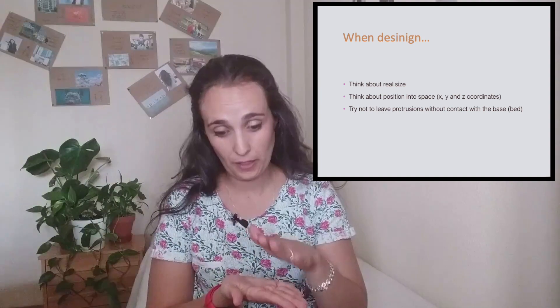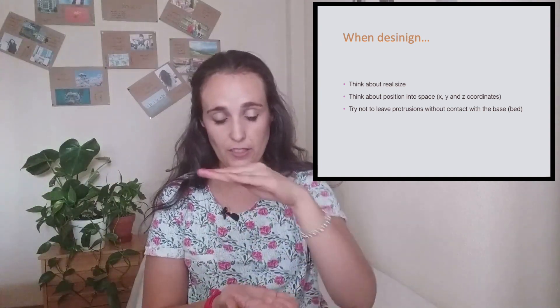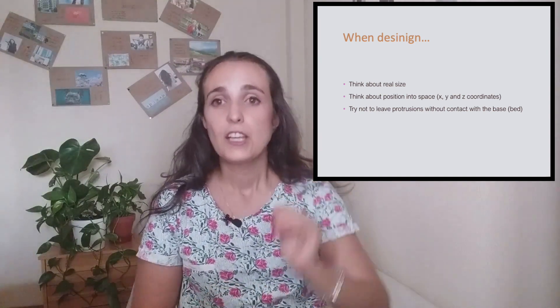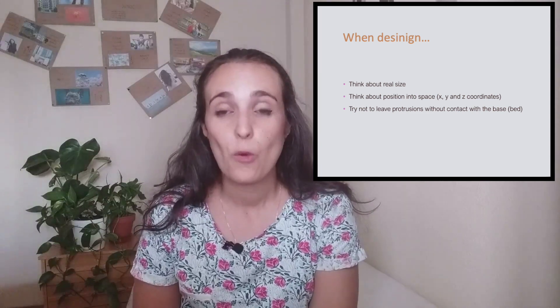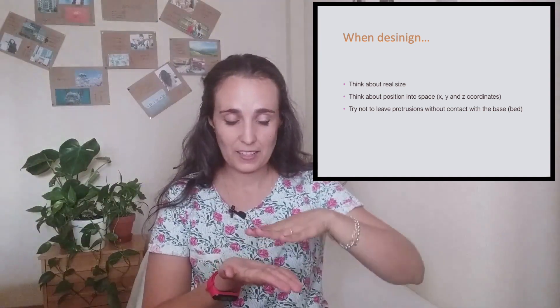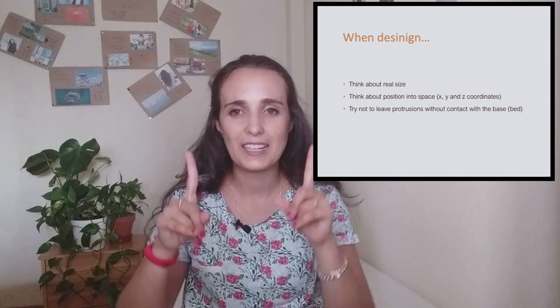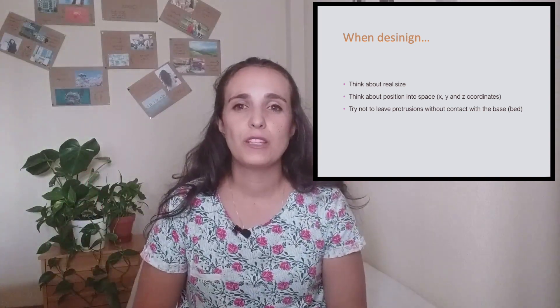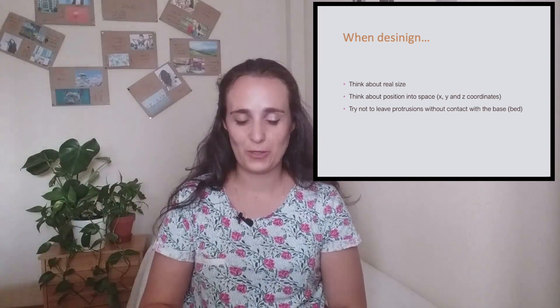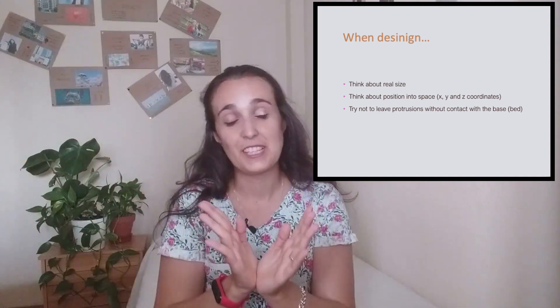As I told you, the 3D printer is going to do in the base, in the bed, the first layer. Then the second, then the third, then the fourth, and so on. So please, try not to leave the protrusions without contact with the base. Why? Because if you start, imagine that you want to do a triangle. And you want to do an inverted triangle. A triangle is a 2-dimensional pyramid, okay? But you want to do it inverted. So you put the peak on the base, and it starts opening, right? This is a pyramid.